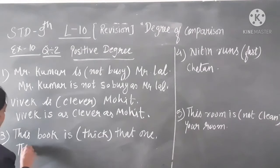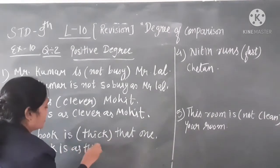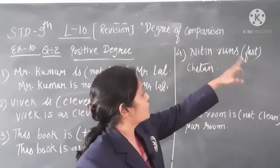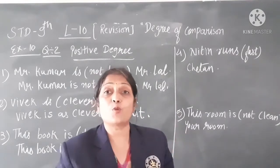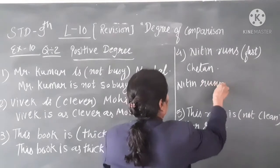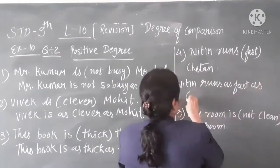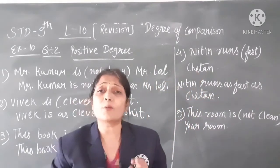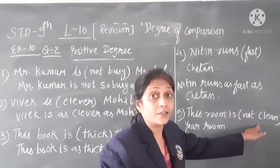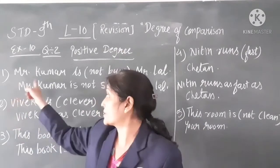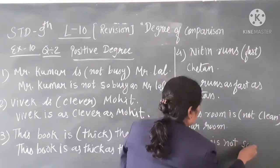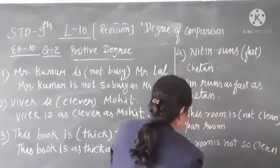Another example: 'This book is as thick as that one.' And: '19 runs as fast as Chetan.' Now for a negative example: 'This room is not clean' — converting to Positive degree gives: 'This room is not so clean as your room.'